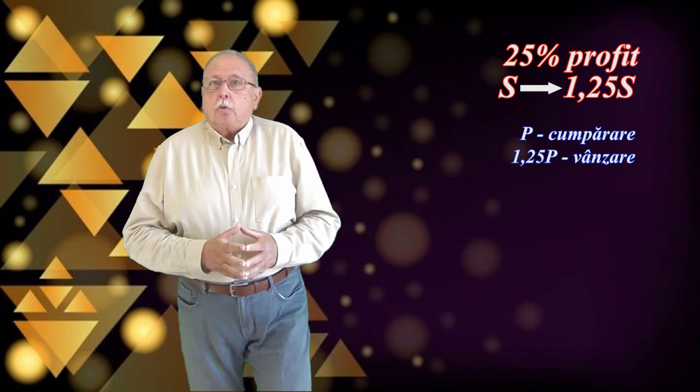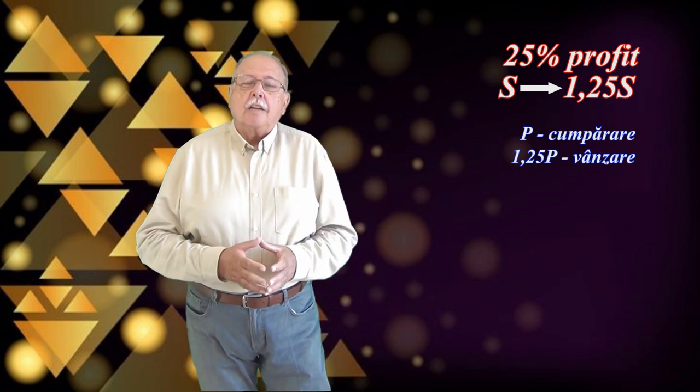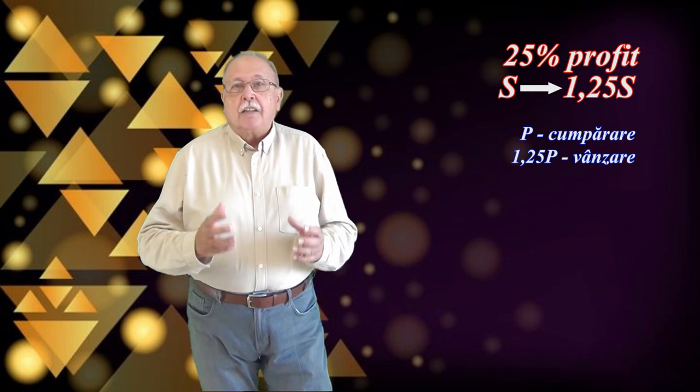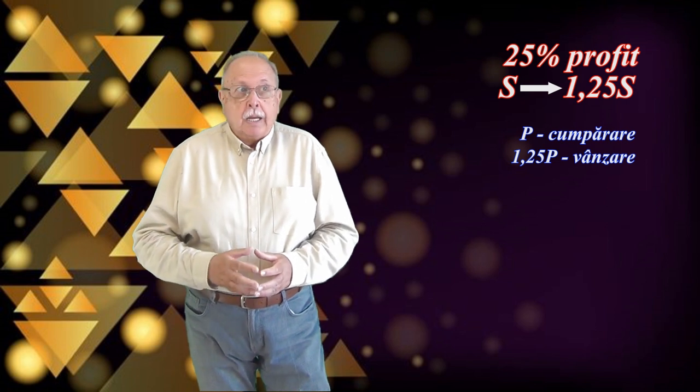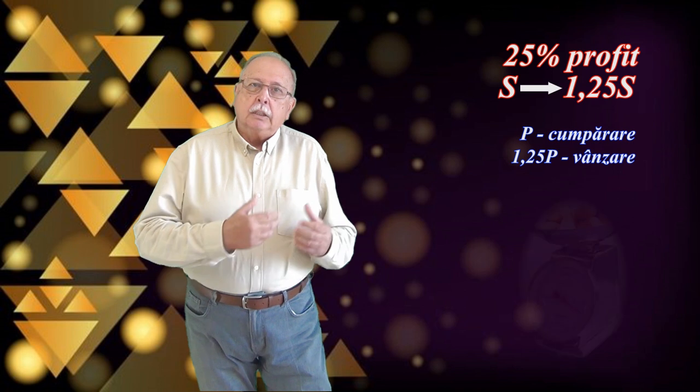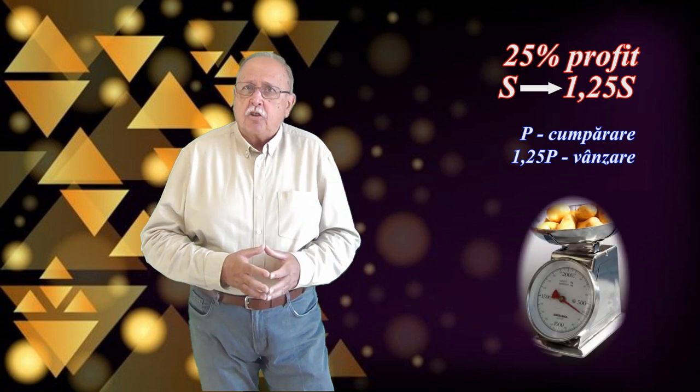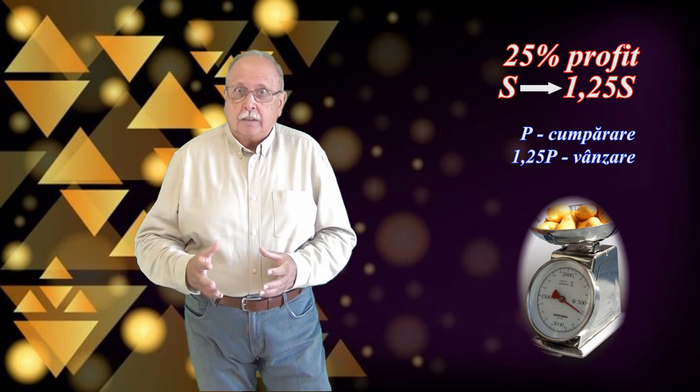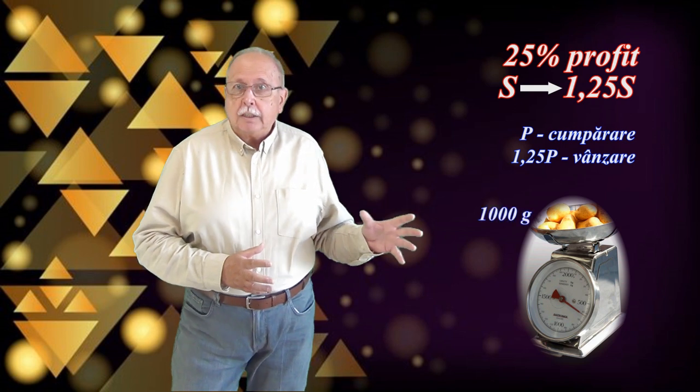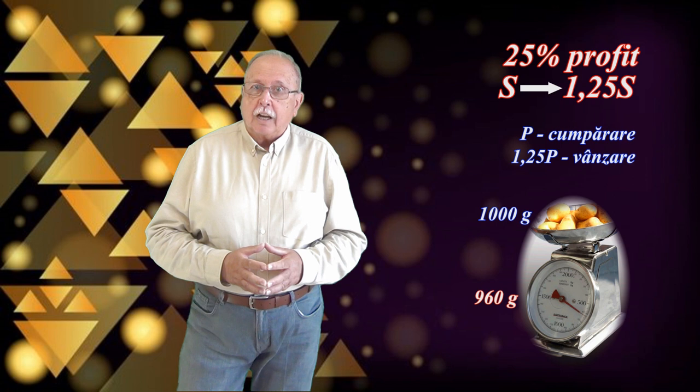La cumpărare a fructelor, totul se desfășoară normal, corect, fructele sunt cântărite corect, deci comerciantul cumpără și plătește exact cantitatea pe care o dorește. Dar la vânzare există o problemă. Cântarul pe care îl folosește comerciantul, fără ca el să știe acest lucru, este defect. Atunci când pe cântar este pus 1 kilogram de fructe, adică 1000 de grame, el arată doar 960 de grame.